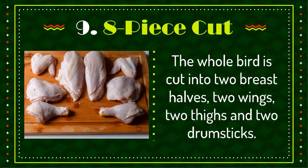Eight piece cut. The whole bird is cut into two breast halves with ribs and back portion, two wings, two thighs with back portion, and two drumsticks. The parts may be packaged together and labeled as whole cut of chicken. These are usually sold without giblets.